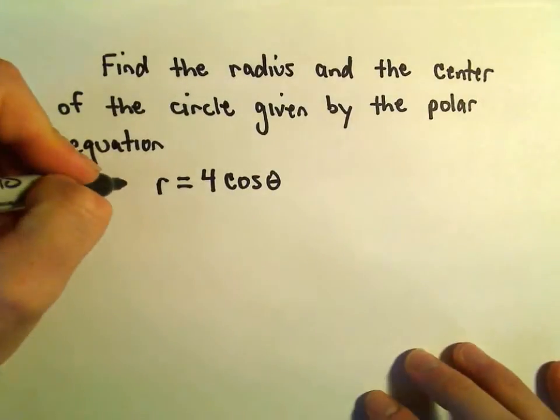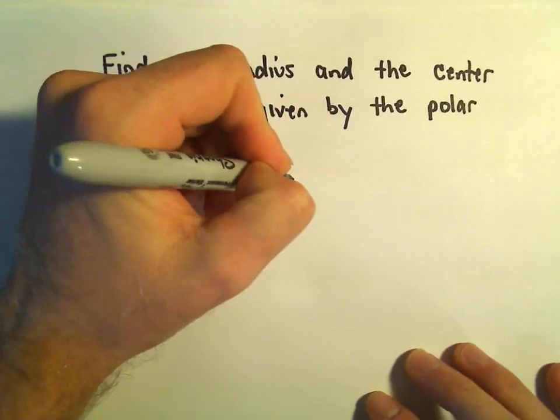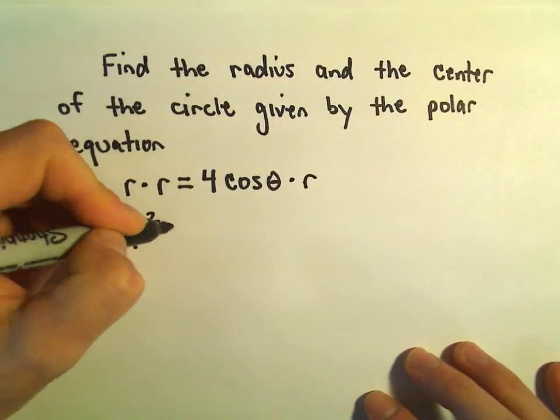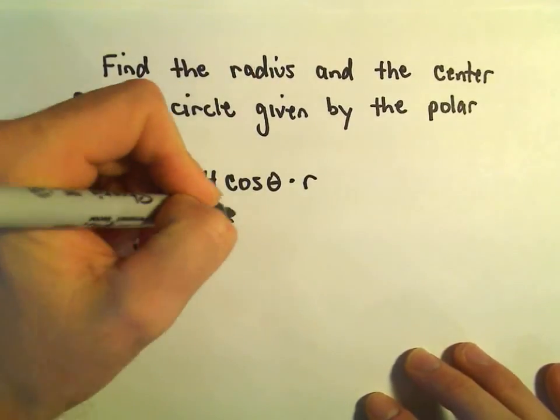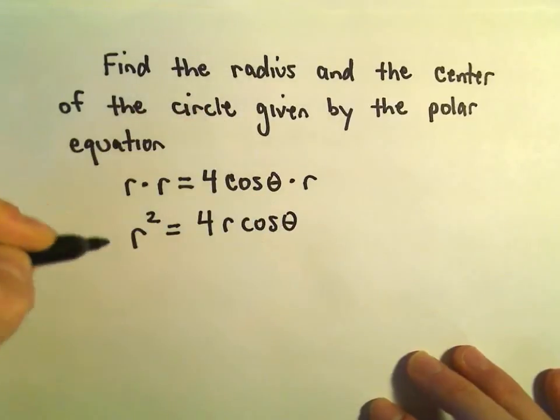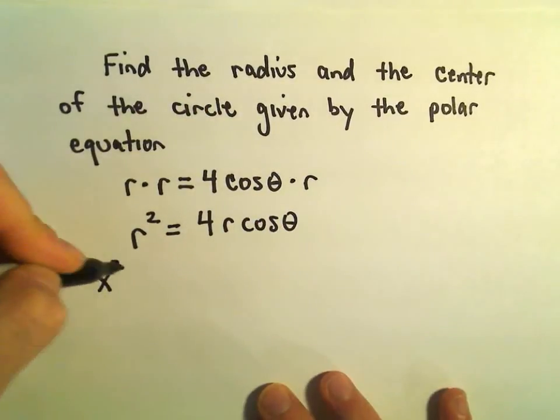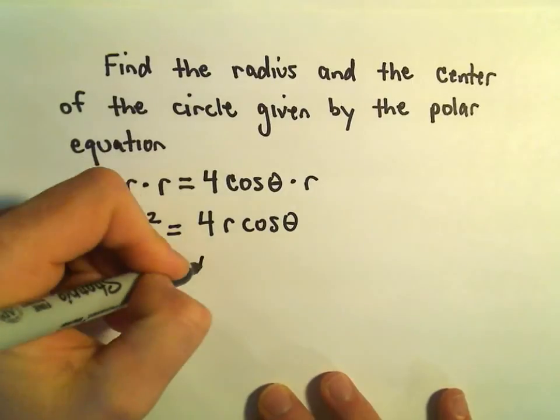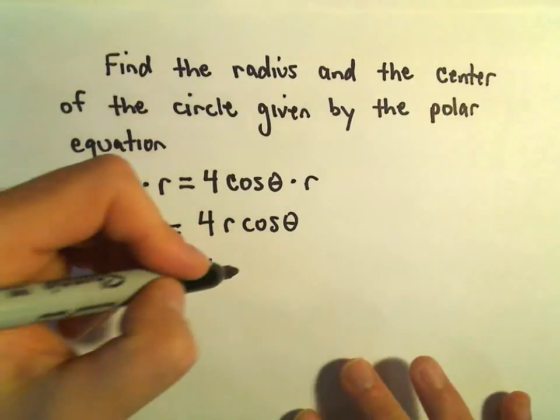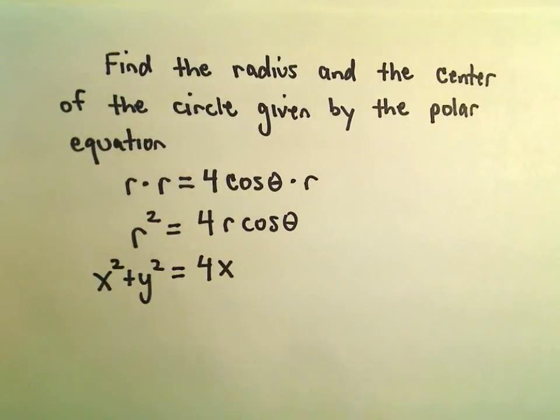So what I'm going to start off by doing is multiplying both sides by r. Then we'll get r squared equals 4 r cosine theta. r squared, we know that's x squared plus y squared. And r cosine theta, that's the same thing as x.